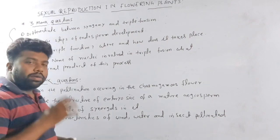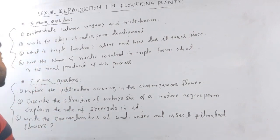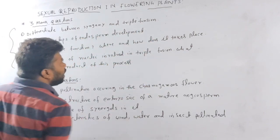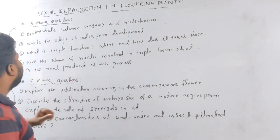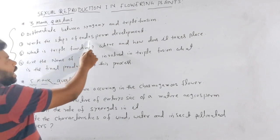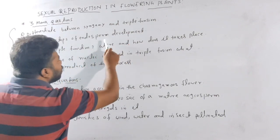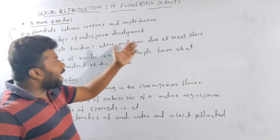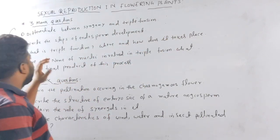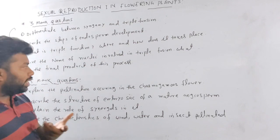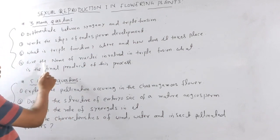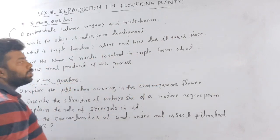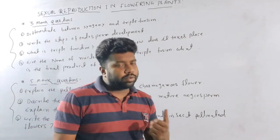Write the difference between syngamy and triple fusion. Write the steps of endosperm development. What is triple fusion — where and how does it take place? Give the name of the nuclei involved in triple fusion and what is the final product of this process.